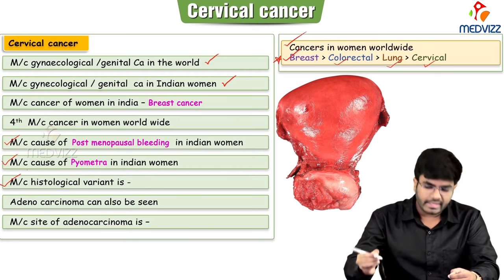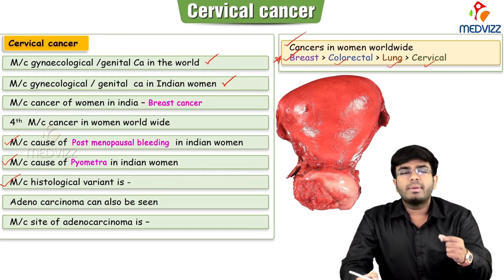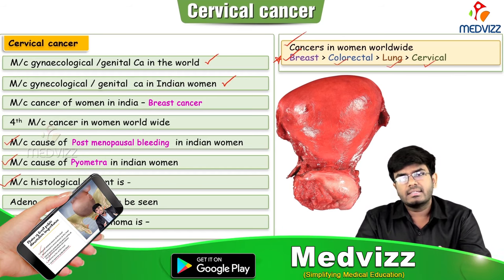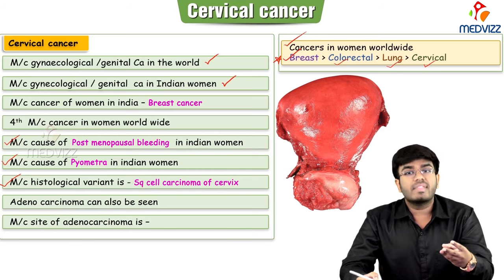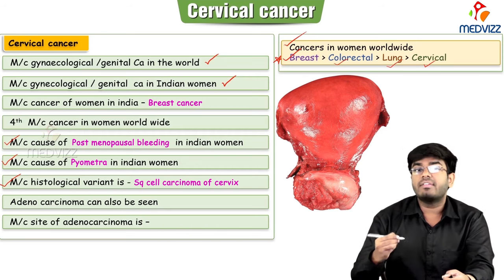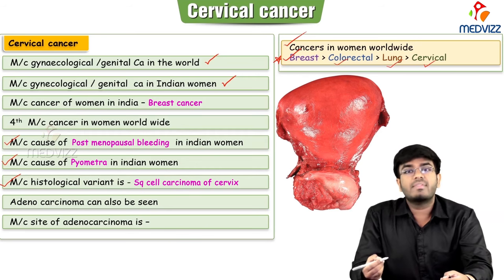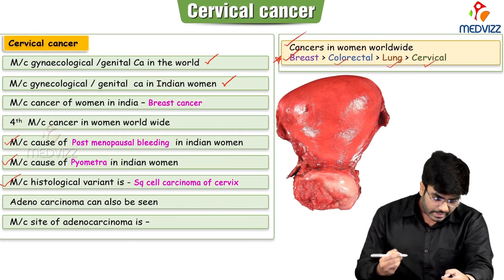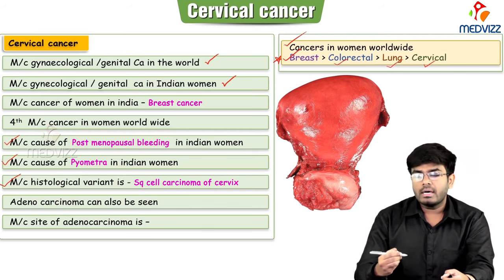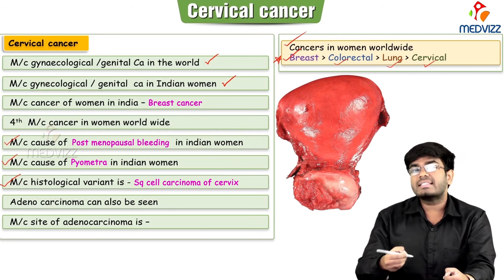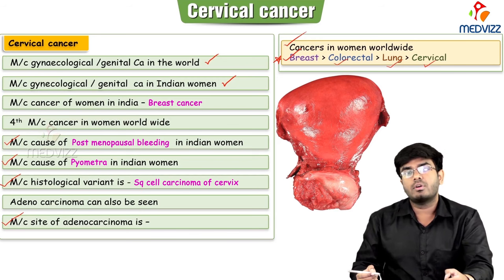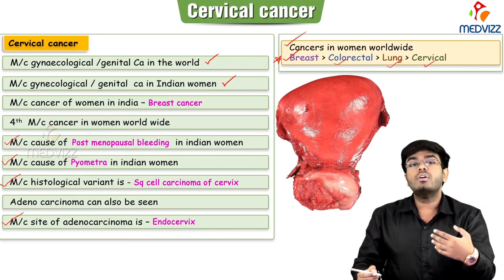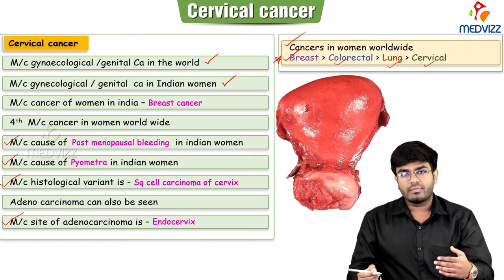The most common histological variant of cervical cancer is squamous cell carcinoma of the cervix. Adenocarcinoma can also exist, and the most common site of adenocarcinoma is the endocervix. These are important one-liner facts to keep in mind.